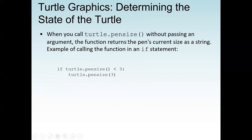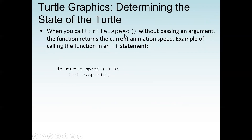When you call turtle.pensize() without an argument, it returns the pen's current size. The pen size tells us the thickness of whatever we are writing or drawing. For example: if turtle.pensize() is less than 3, we set it to 3. We can also call turtle.speed() without an argument; it returns the current animation speed. For example: if turtle.speed() is greater than 0, we set it to 0.